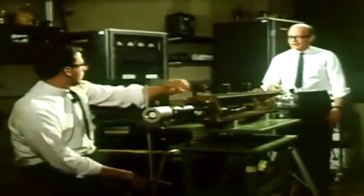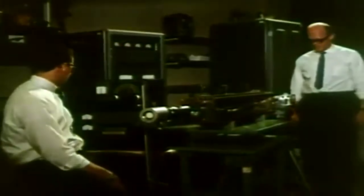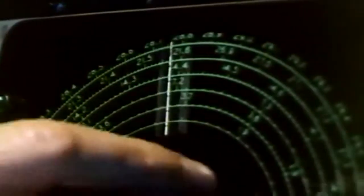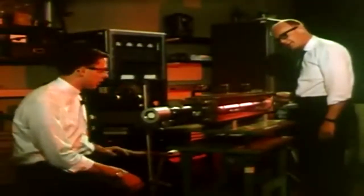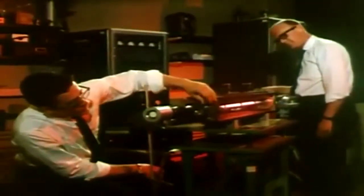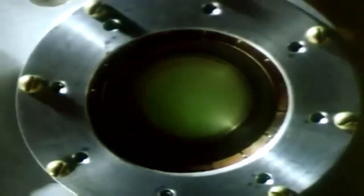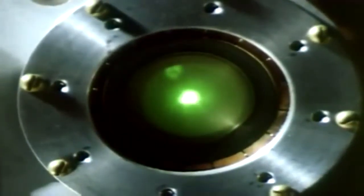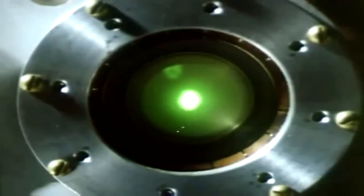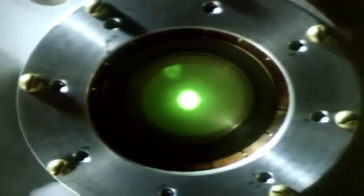The scientists who built this laser, who coaxed it to give forth light, gave it a name. They called it Eve. February 1961. The first continuous coherent light on Earth.